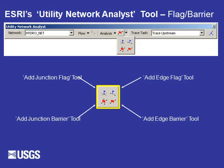We'll now look at the Flag and Barrier tools. There is an Add Junction Flag and an Add Edge Flag tool. The difference is the location of the point where the action will start. To use the Junction Flag, I must place the point at a junction of two NHD flowline features. I personally prefer the Edge Flag tool, because I don't have to zoom in as far and can locate it at any point on an NHD flowline. The Junction Barrier and Edge Barrier tools will prevent flow from going through any feature they are placed upon.